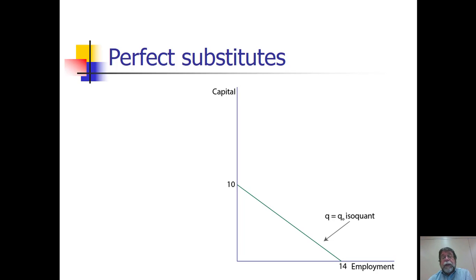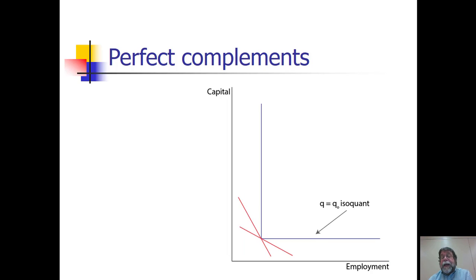So when we have perfect substitutes, the elasticity of substitution is said to be infinite because they're perfectly substitutable for each other.